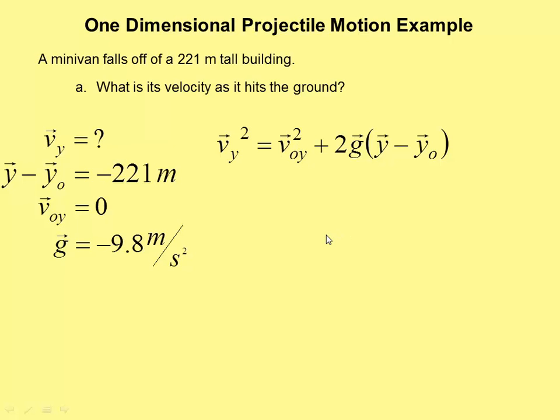Voy is zero. And if the initial vertical velocity is zero, the initial vertical velocity squared is also zero. So that makes the problem a little easier to deal with. So we end up with final vertical velocity squared equals two times the free fall acceleration times the vertical displacement.